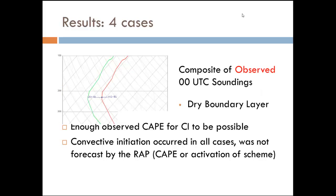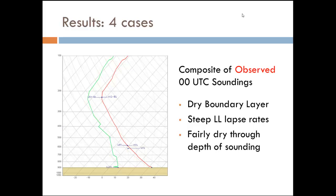Looking at the four cases in a composite sounding — these are the observed 0Z soundings composited together — you see the type of environment where you're starting to get errors. It's very dry, with very steep low-level lapse rates. The boundary layer is also very dry, so you end up with a super-high LCL and a high LFC. And even though it's very unstable in the boundary layer, it's probably going to be a low-CAPE environment just because your LCL and LFC are so high. This looks like your typical high-plains sounding.